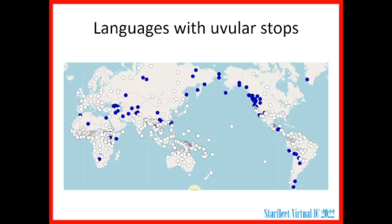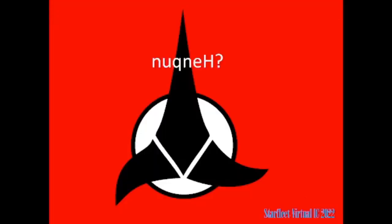That little glob of flesh at the back of your mouth is called the uvula, and you can pronounce a stop consonant there — some languages do. If you look at a map, the white dots are languages that don't have uvular stops and the blue ones are languages that do. Throughout Europe the languages you're most likely to have run into don't have a uvular stop, but in Central Asia or in the Native American languages spoken in Northwest North America, you see quite a few. It sounds like "kha" or "kho," and Klingon uses it in words like nuqneH.